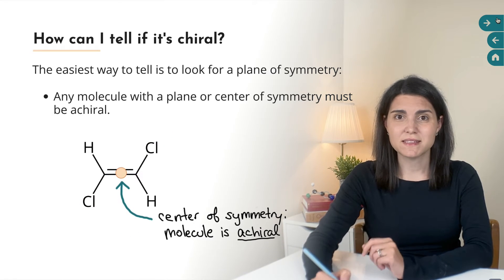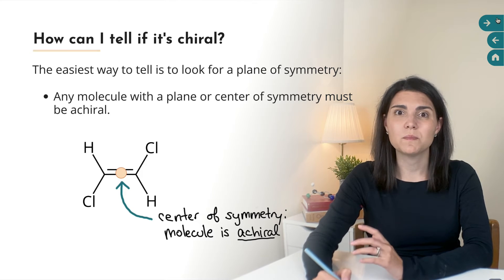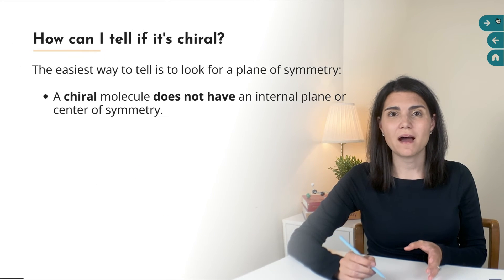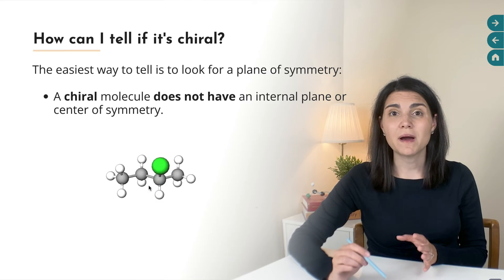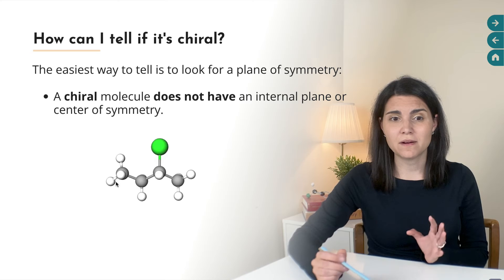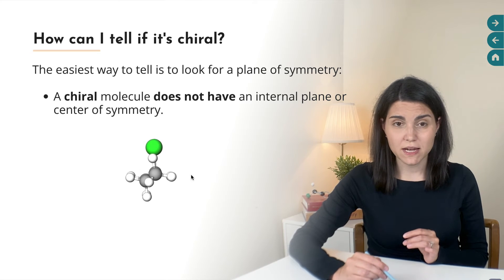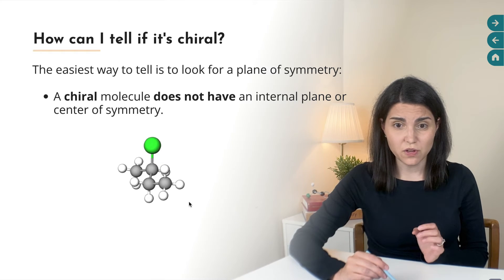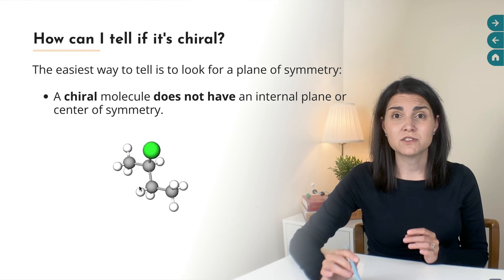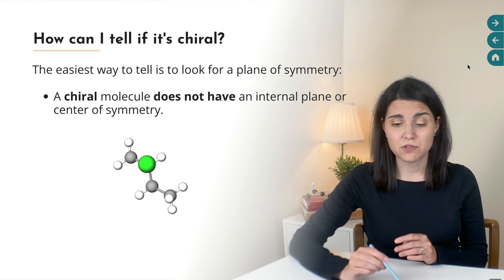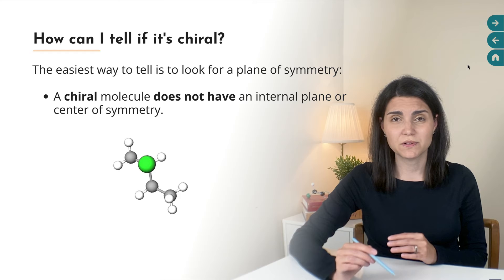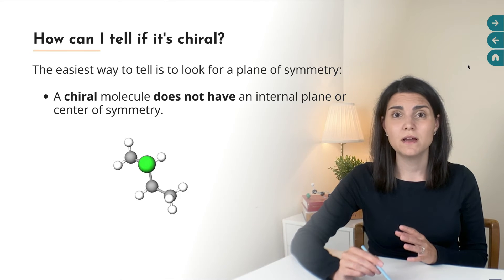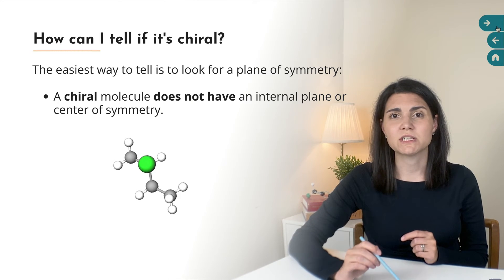Anytime a molecule has a center of symmetry like this it will be achiral. Let's bring back this 3D model of our original molecule 2-chlorobutane. No matter what we do to this molecule no matter how we look at it and rotate it around and change the view there's no way that we can find an internal plane or center of symmetry for this molecule. Anytime that you find a molecule where you cannot do either of these two symmetry operations the internal plane or the center of symmetry the molecule is by definition chiral.